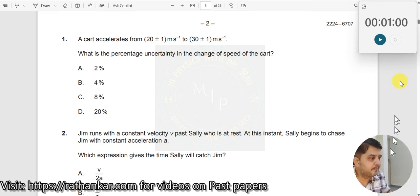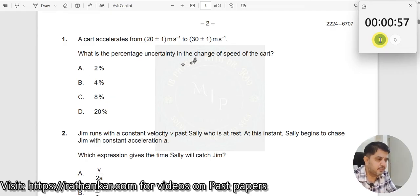Okay, question number 1. Let me start the timer. Alright. So, a cart accelerates from 20 plus or minus 1 to 30 plus or minus 1 meter per second. Okay.